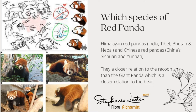The Giant Panda and the Red Pandas are absolutely not connected. In fact, the Red Panda is more closely related to the raccoon as opposed to the Giant Panda. The Red Panda was discovered before the Giant Panda. And it's only recently that they've discovered it's actually two different species rather than subspecies — one which lives mainly in the Himalayan area of India, Tibet, Bhutan and Nepal, and the other species is the Chinese Red Panda.